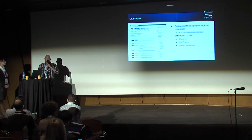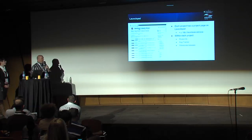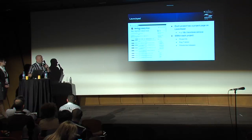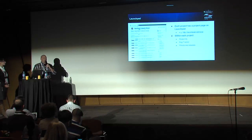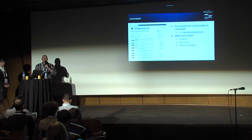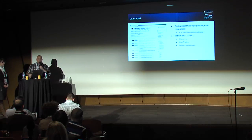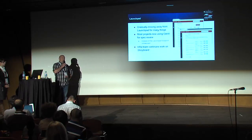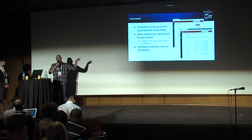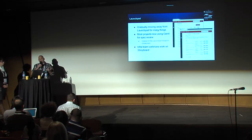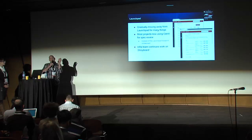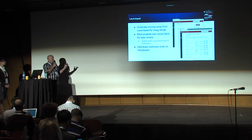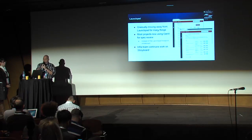Launchpad — we hate it and we have to use it. Each project in Launchpad has its own project page at launchpad.net/nova, launchpad.net/neutron, and so forth. If you want to see the general roadmap of a particular project, look at the blueprints and milestones pages in Launchpad. We're gradually moving away from Launchpad toward Storyboard, but until Storyboard is ready for prime time, most bug tracking and milestone targeting is still done in Launchpad.